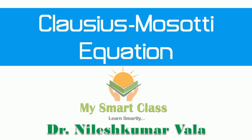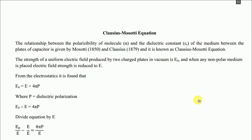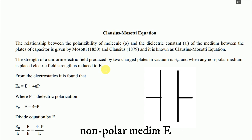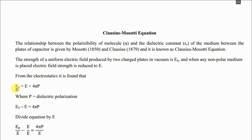We are now on my laptop screen and the heading is 'Clausius-Mossotti Equation by My Smart Class.' The relationship between the polarizability of a molecule alpha and the dielectric constant epsilon-r of the medium between the plates of a capacitor is given by Mossetti and Clausius, and it is known as the Clausius-Mossotti equation. Consider a capacitor with two plates. If there is nothing between them, it is vacuum, and the electric field strength is E0. If we place a nonpolar medium between the two plates, the electric field becomes E, where E is less than E0. From electrostatics: E0 = E + 4πP.